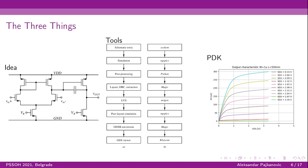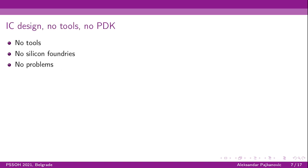The PDK is an abbreviation for Process Design Kit, and it's basically the collection of data related to devices that the factory can fabricate. This contains models and information of devices such as transistors, diodes, resistors, and so on. When we work on an idea within the tools to solve a problem, we have to use this information in order to make our results achievable and our design manufacturable.